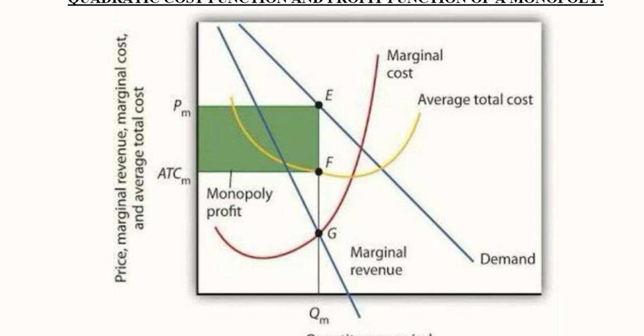This is the profit per unit, which we can multiply with the number of units to produce at equilibrium. It's also equal to this length from O to Qm. We can find the area of this rectangle, which gives us the monopoly profit.